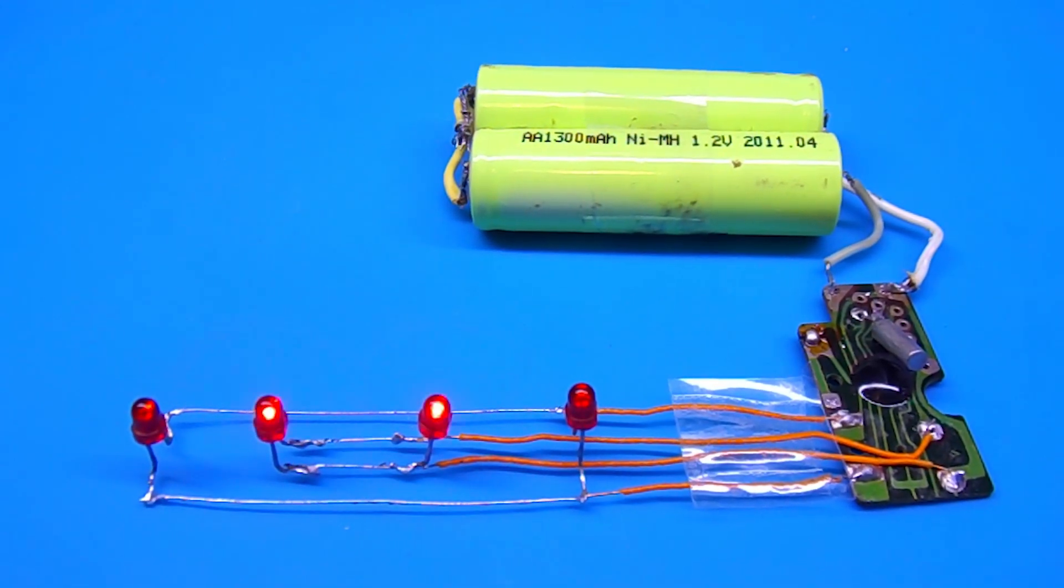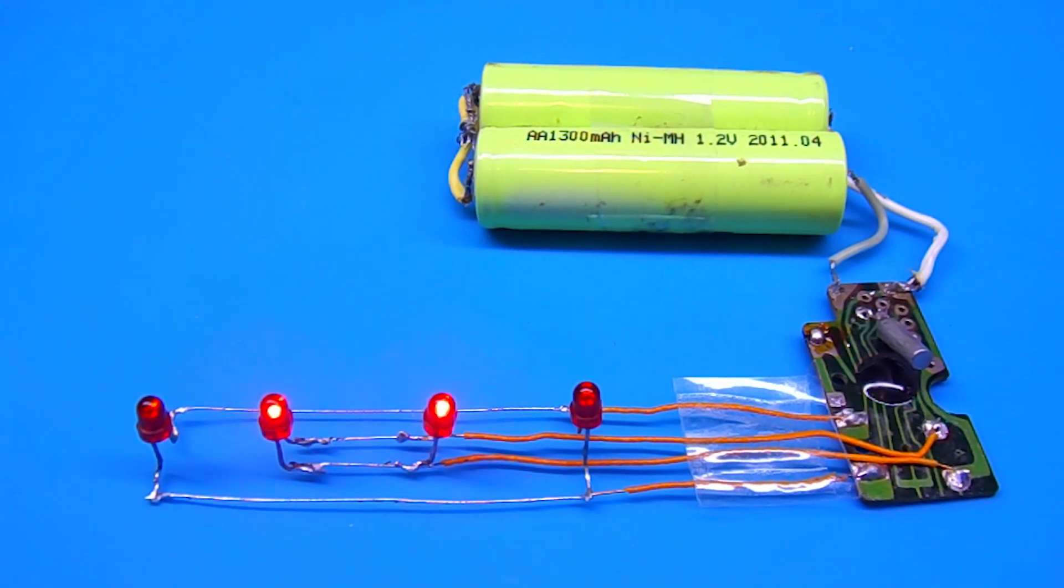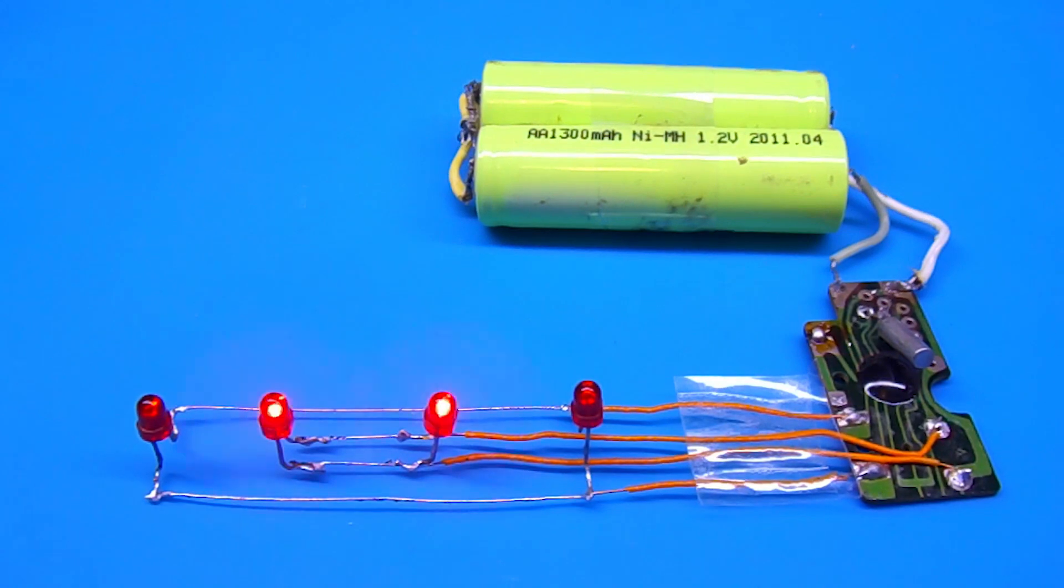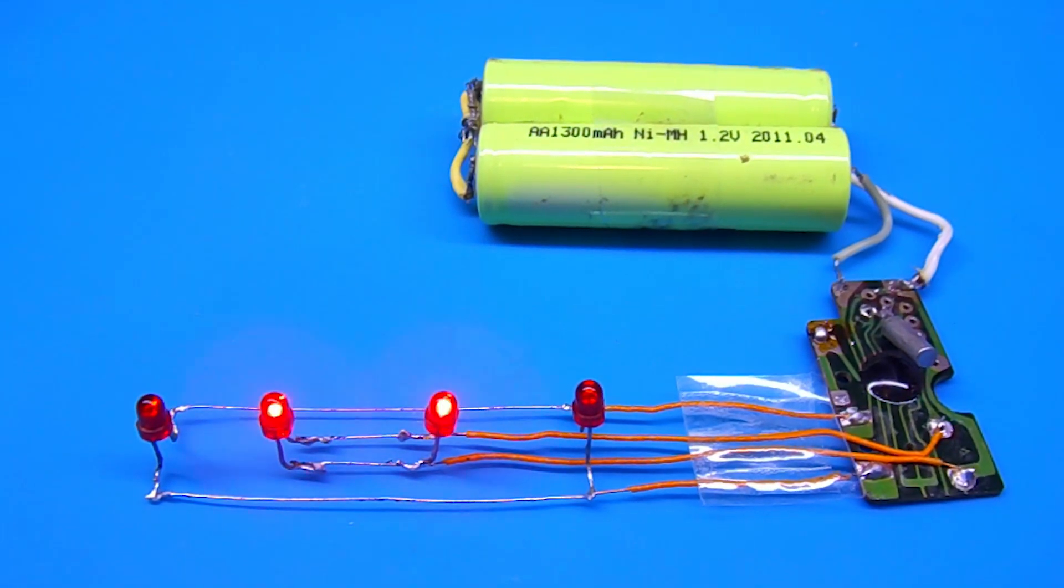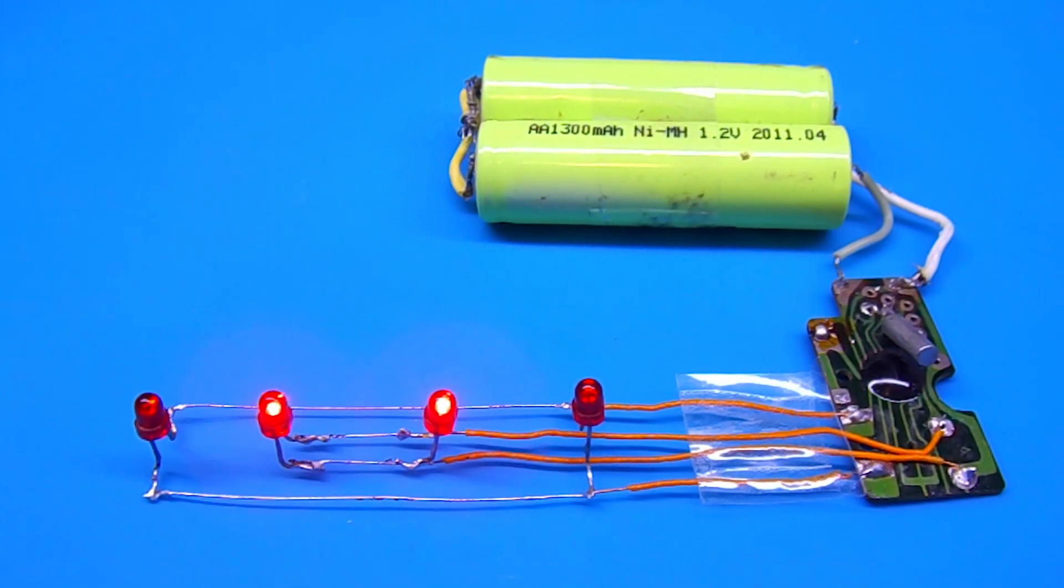The circuit does not have to be powered by a lithium-ion battery. You can use two batteries, one and a half volts. Just connect them in series. Such a scheme will no longer pull 5mm LEDs, but for the use of 3mm LEDs, it will be just right.